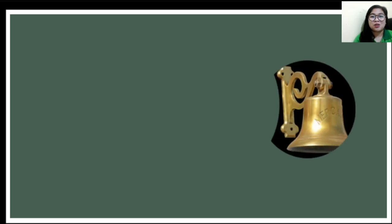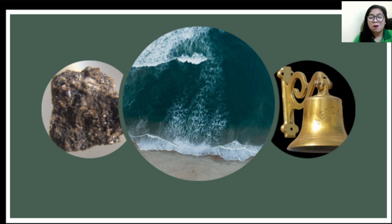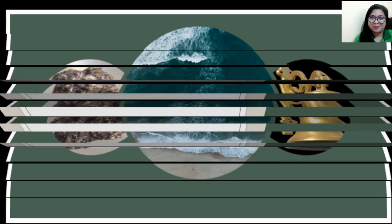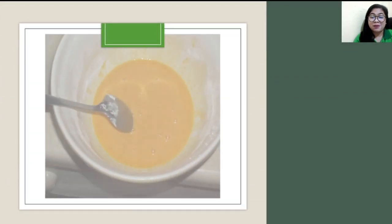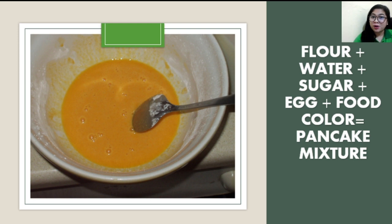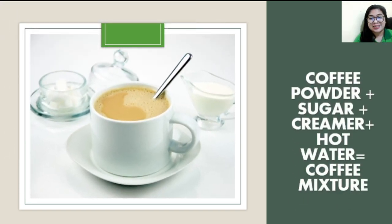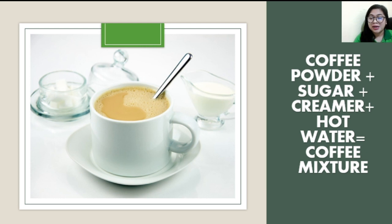Since many things around us are mixtures, let's take some examples. We have brass, which is a combination of different metals. We have rock, which is a combination of different minerals. We have seawater, which is a combination of salt and water. Another example is pancake mixture, which is a combination of flour, water, sugar, egg, and food color. We also have coffee mixture, which consists of coffee powder, sugar, creamer, and hot water.